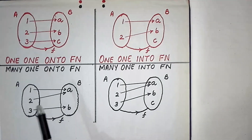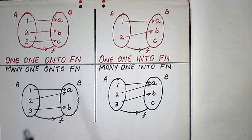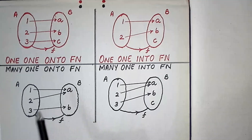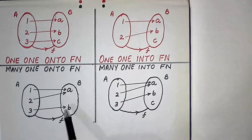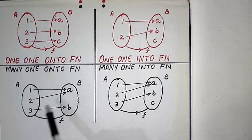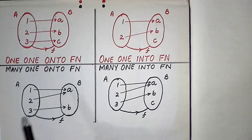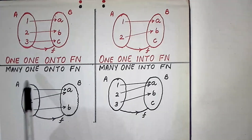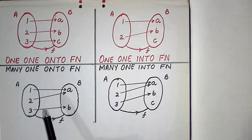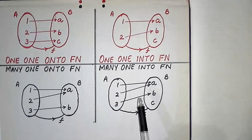If a function is both many-one and onto, it is called a many-one onto function. Here the second element 'a' of ordered pairs is repeated, so this is many-one, and the range is equal to co-domain, so this is also onto. Therefore this is an example of a many-one onto function.